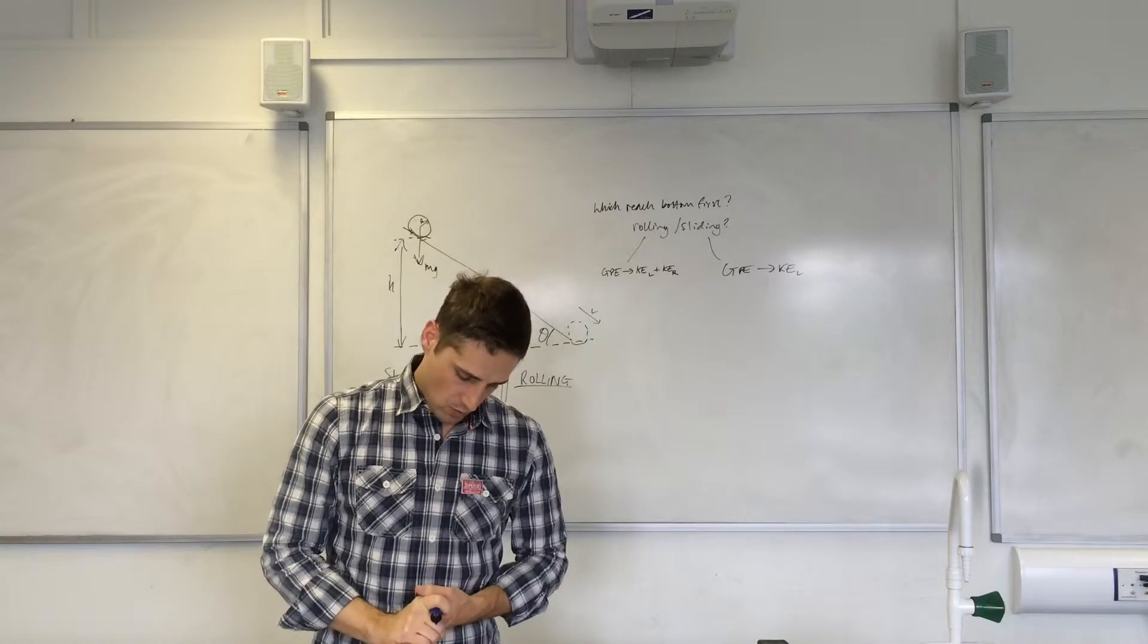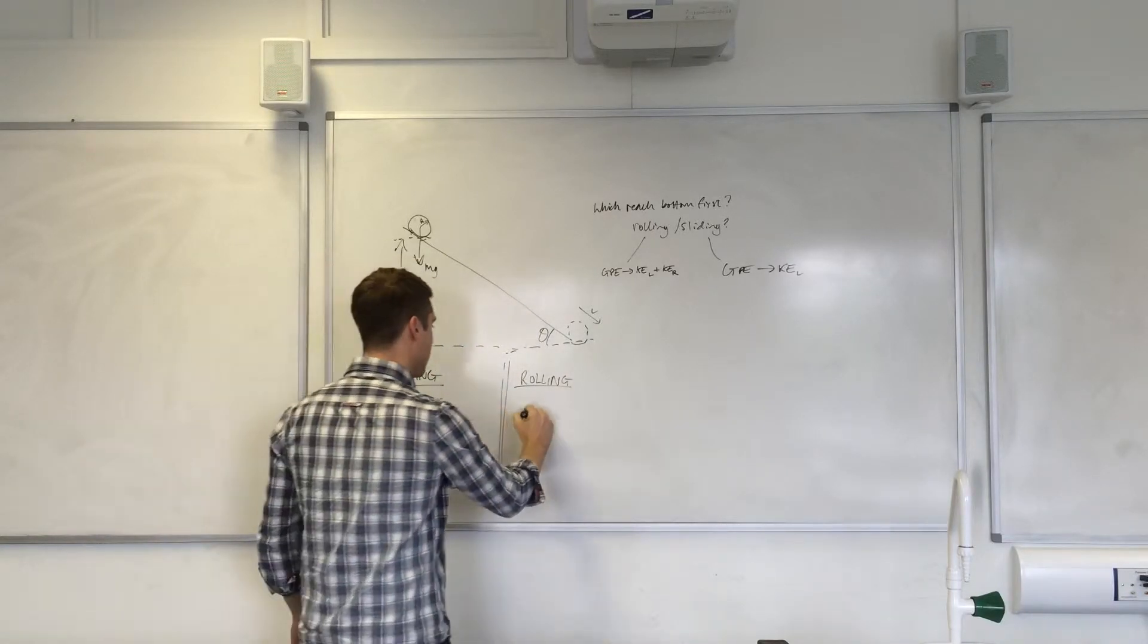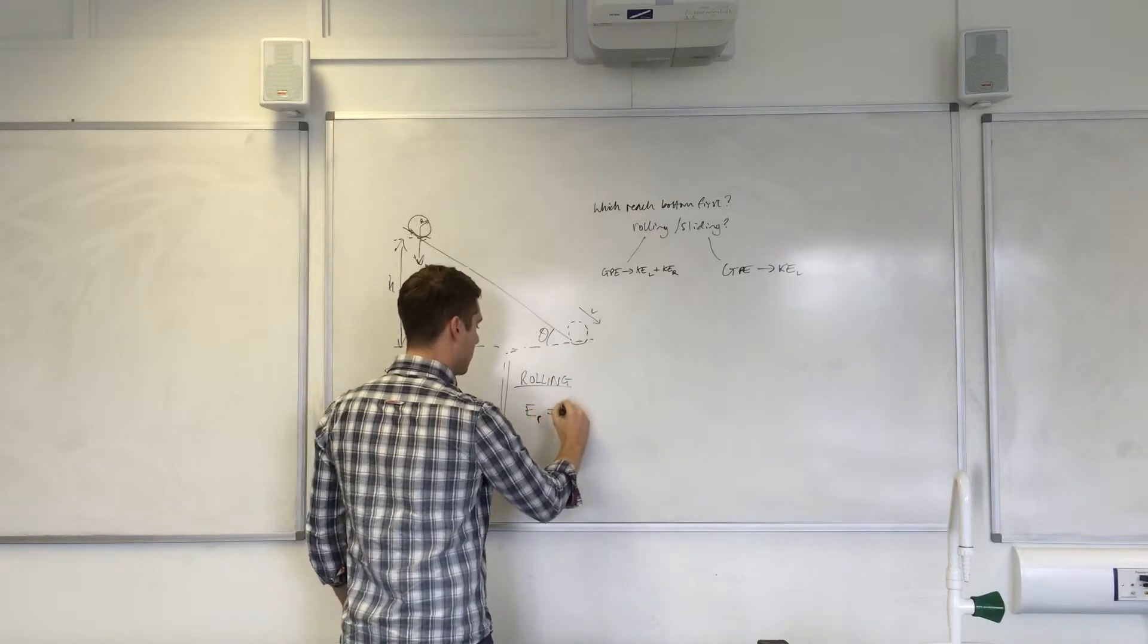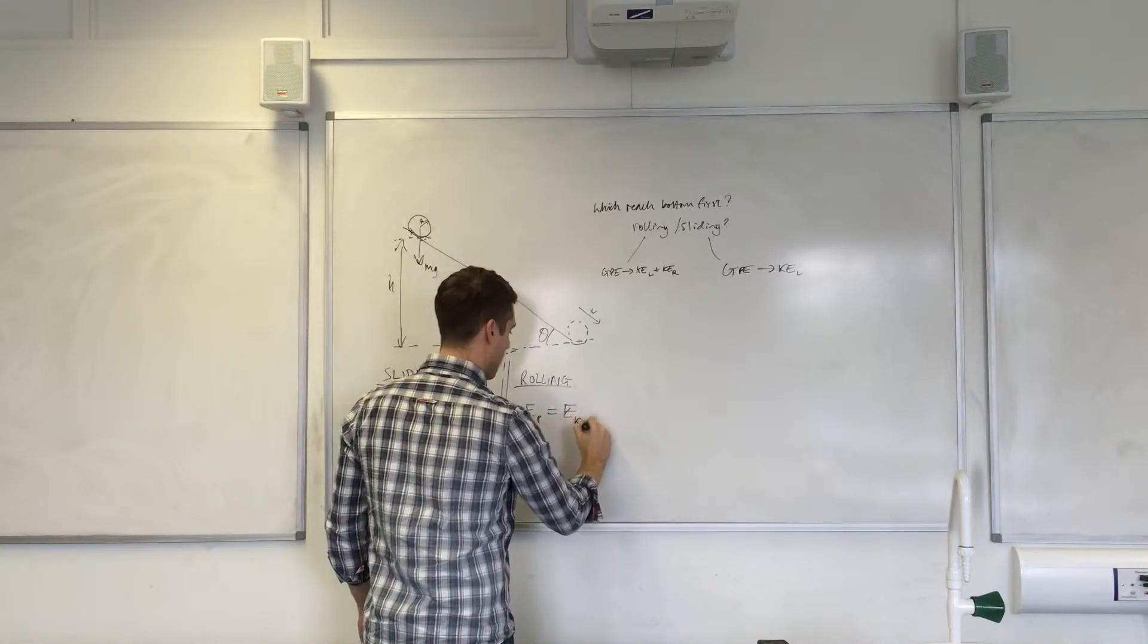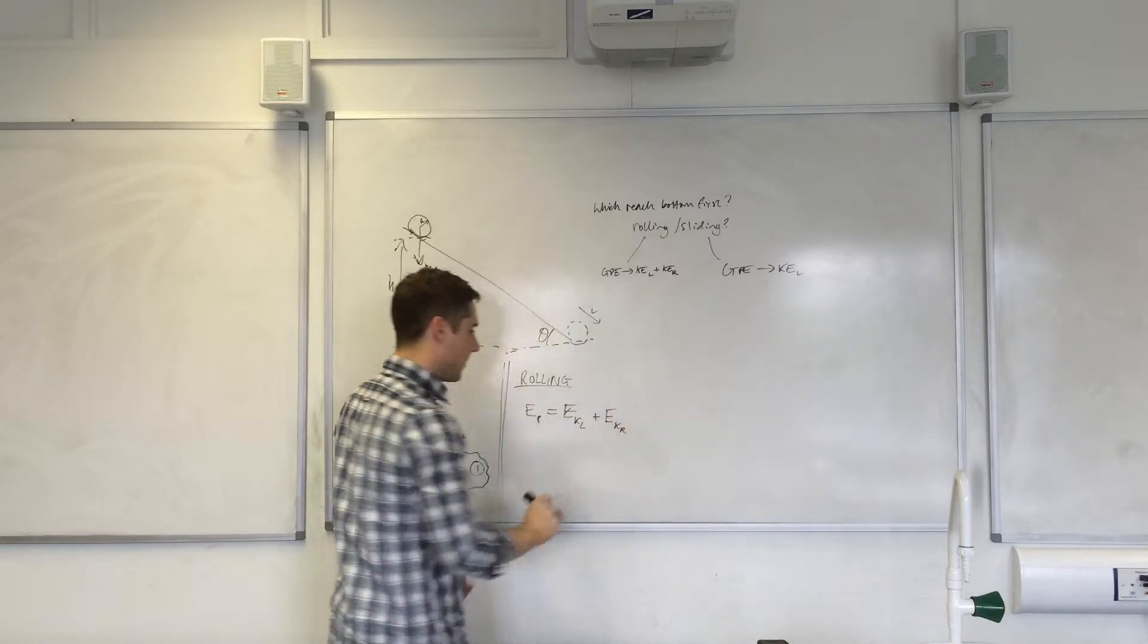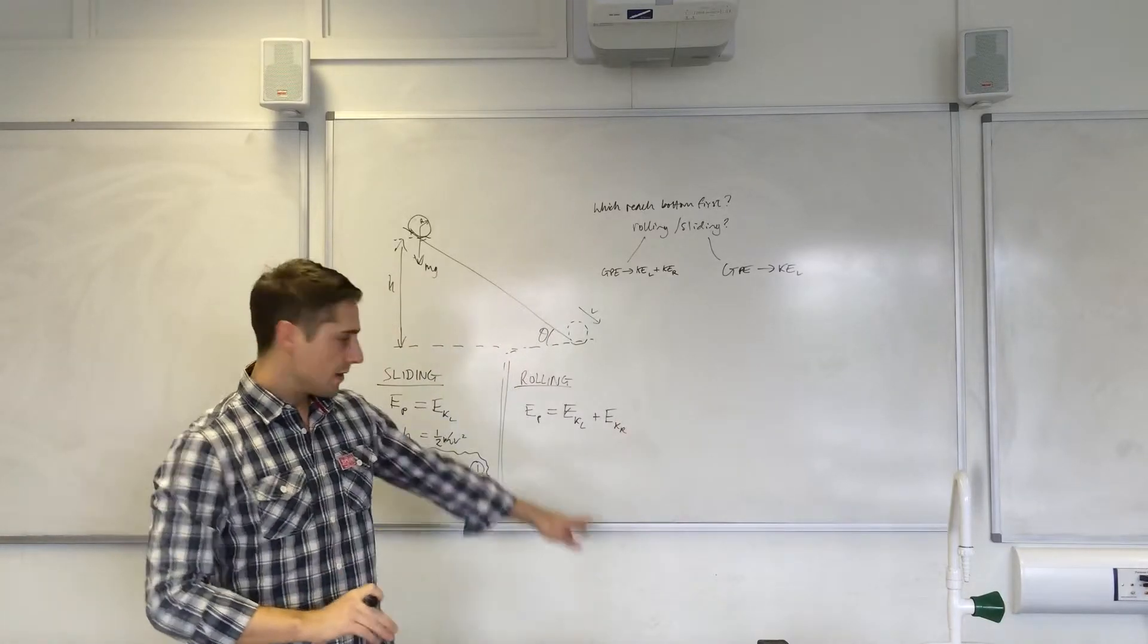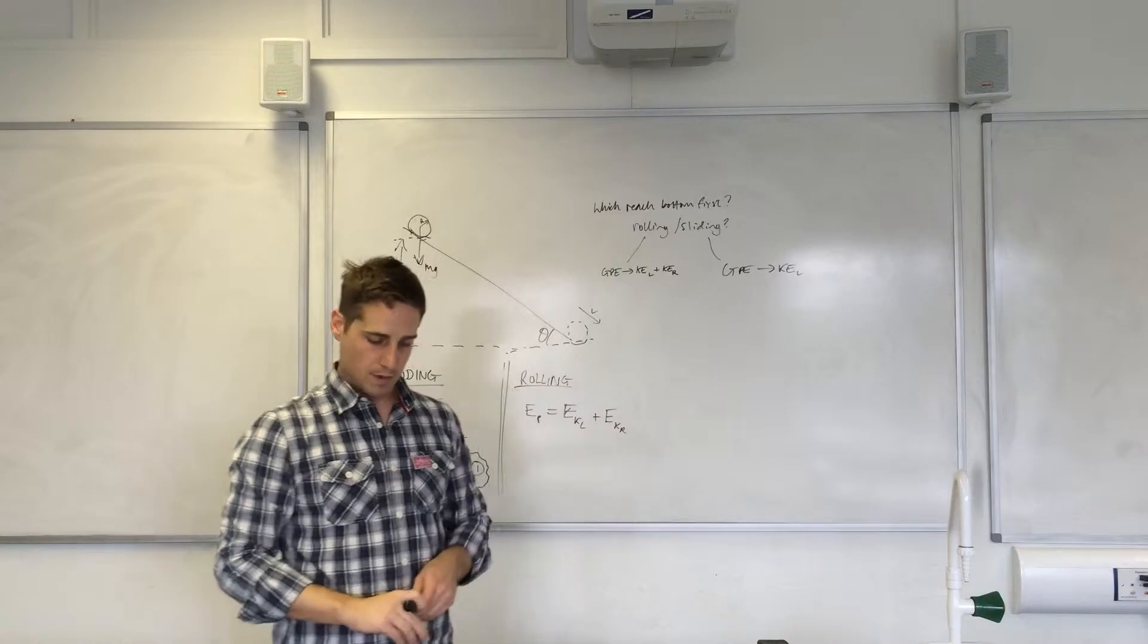Okay, rolling then. We've got our conservation of energy equation, which is mgh equals half mv squared plus half I omega squared. So that's the linear component of the kinetic energy; that's the rotational component.